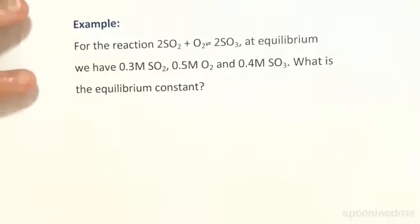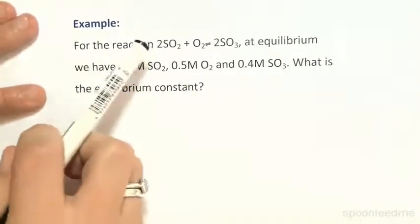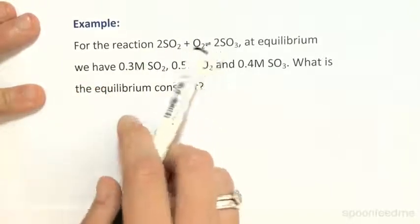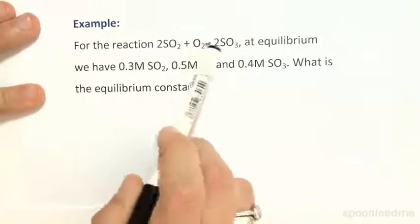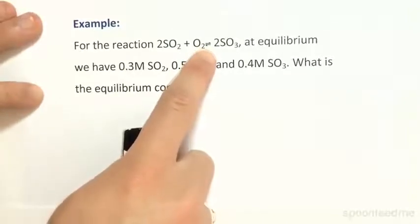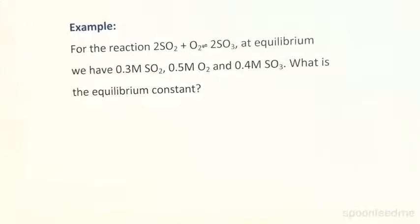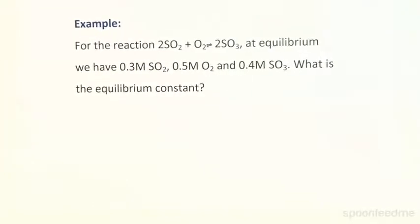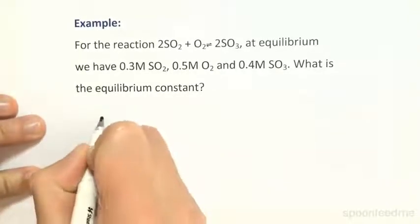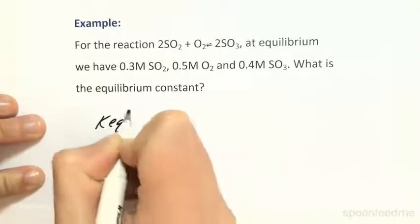Let's look at the following reaction: 2SO₂ + O₂ is in equilibrium with 2SO₃ — this symbol just means 'in equilibrium with'. At equilibrium we have 0.3 mol/L of SO₂, 0.5 mol/L of O₂, and 0.4 mol/L of SO₃. So what is the equilibrium constant? First, let's write out the equilibrium constant expression, Keq, for this reaction.